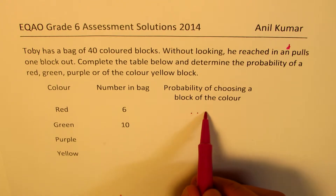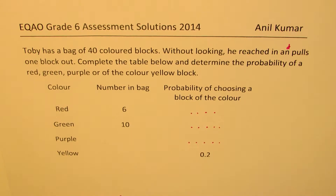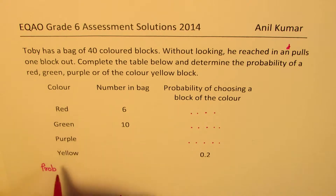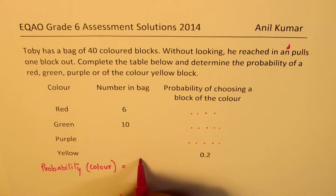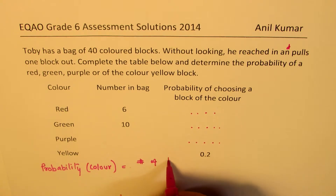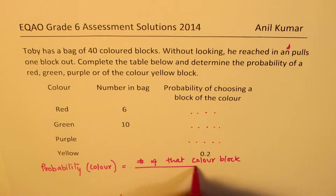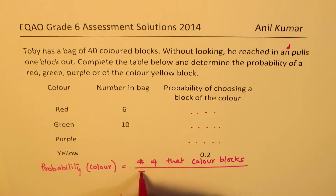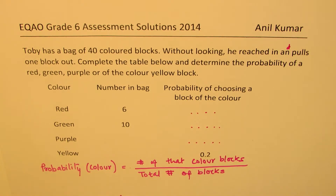You need to write down the probability for red, probability for green, and probability for purple. For some students, let me write down the definition of probability first. The probability of any color is the number of that color's blocks divided by the total number of blocks.